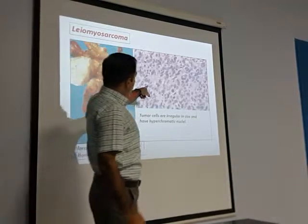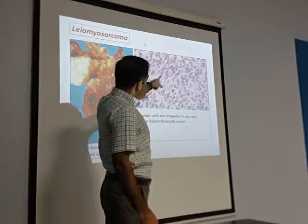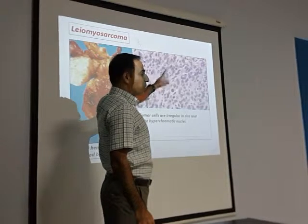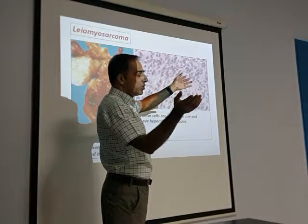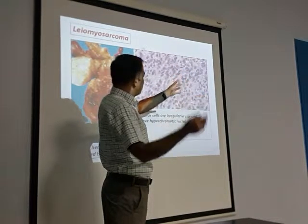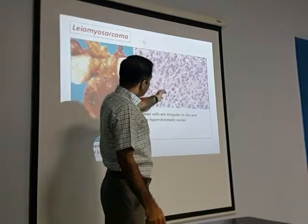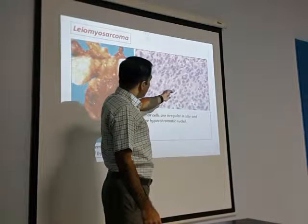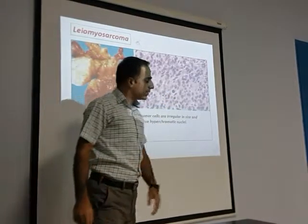This is what you will find — these are leiomyomas, and this is leiomyosarcoma: a hemorrhagic, necrotic mass. Look at the shape of the cell. Leiomyomas are very benign cells with no change in size or shape. But here the cells are pleomorphic and hyperchromatic.